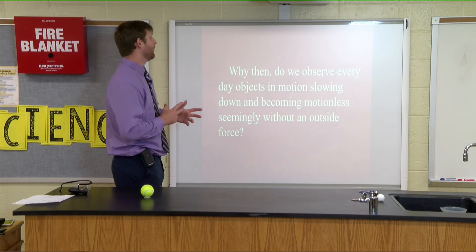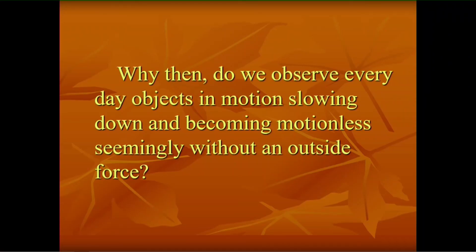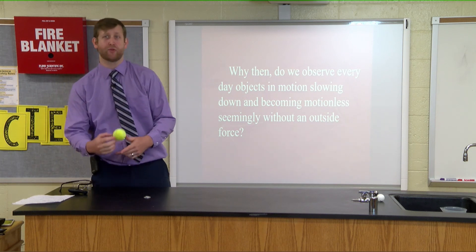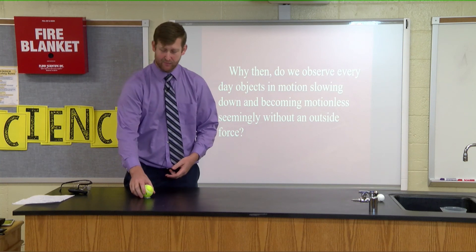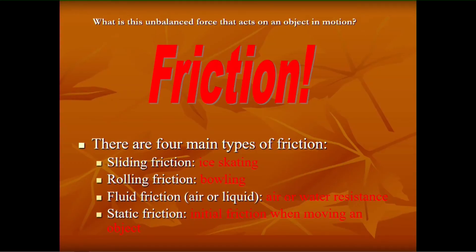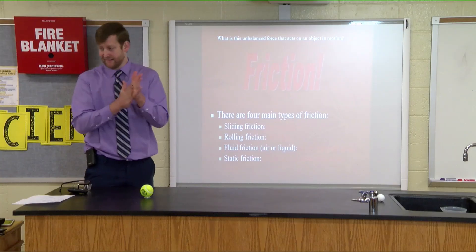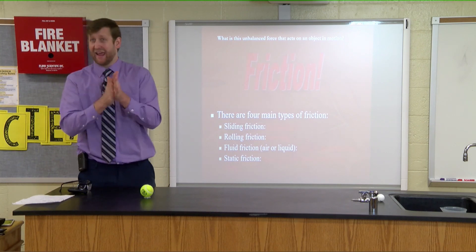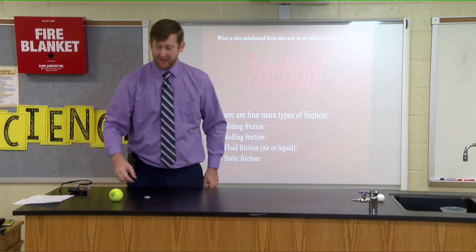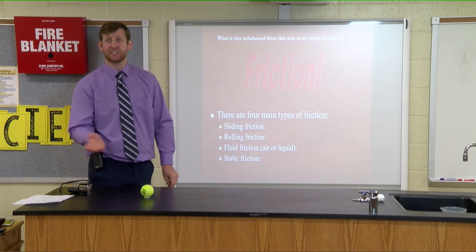When objects on Earth slow down without anything visibly touching them — if I roll this ball, why does it slow down and stop? There's a force between the ball and the table that you don't see. If you said friction, you'd be correct. Friction is when two surfaces contact each other and rub together. If you rub your hands together you're creating friction — my hands are getting warm, which means friction creates heat. Some of the energy in motion turns into heat energy, thus slowing the object down.